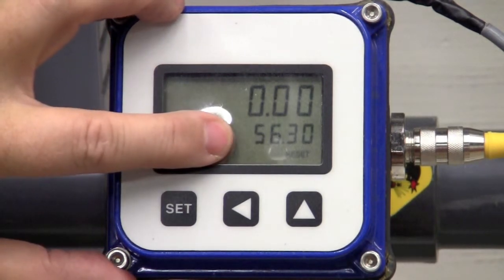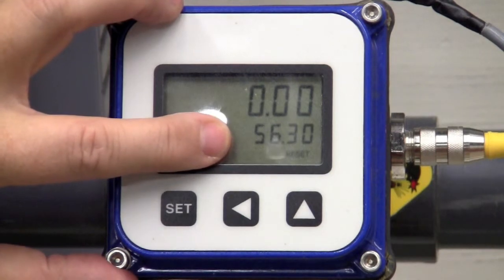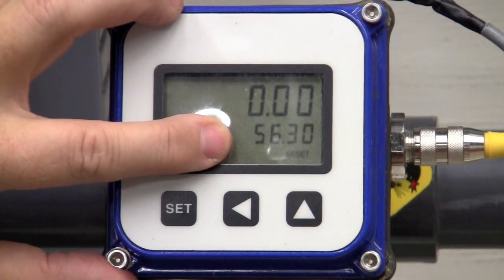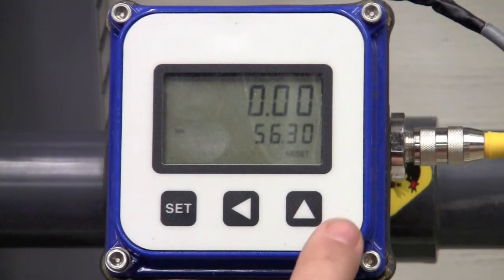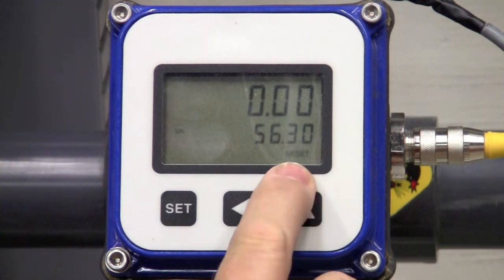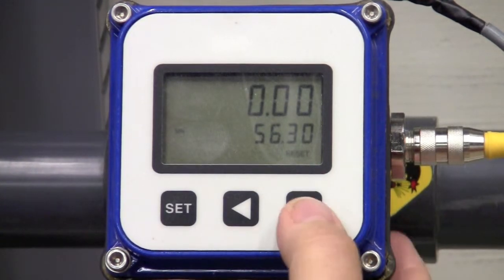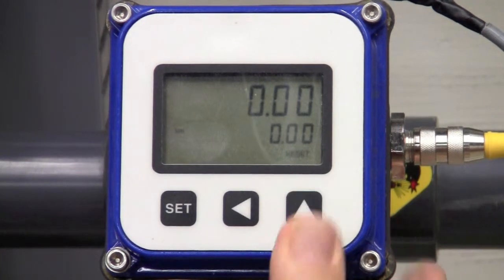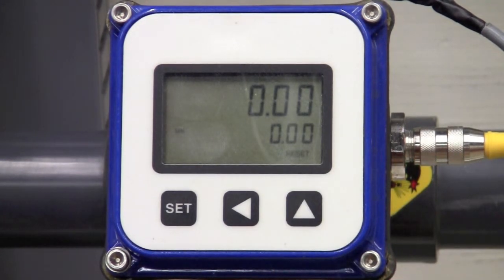The bottom line is your total, and right now we have 56.3 gallons on that totalizer. It's very easy to reset that total. You'll see the word reset here, and this is the up arrow. All you have to do is push it once, and you can easily reset that to zero gallons on your totalizer.